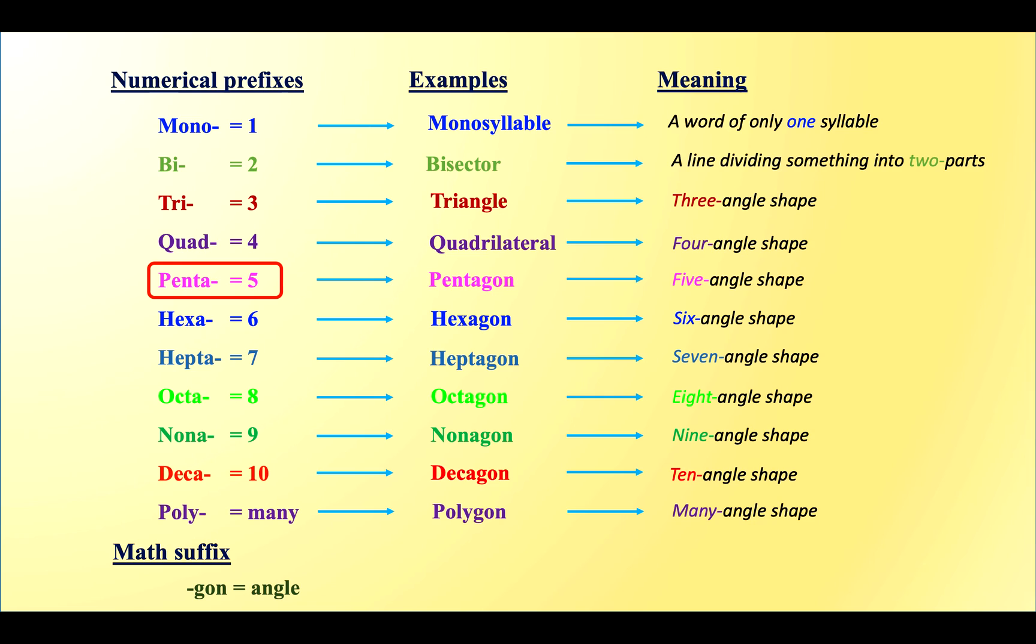Penta means five. Hexa means six. Hepta means seven. Octa means eight. Nona means nine. Deca means ten. Poly means many.